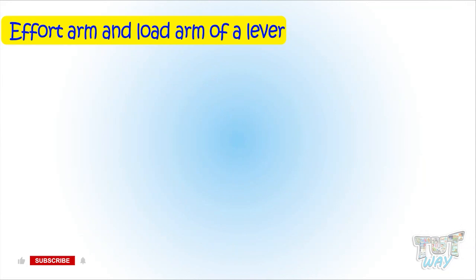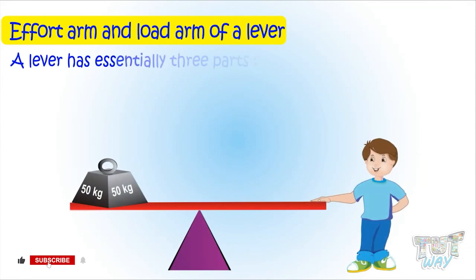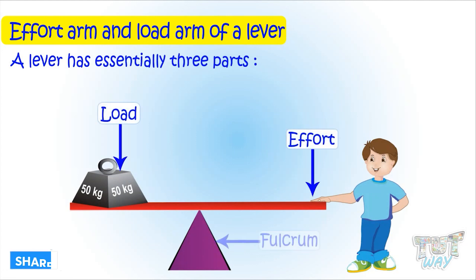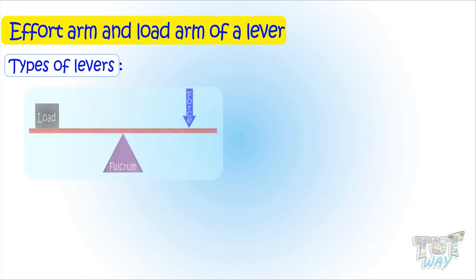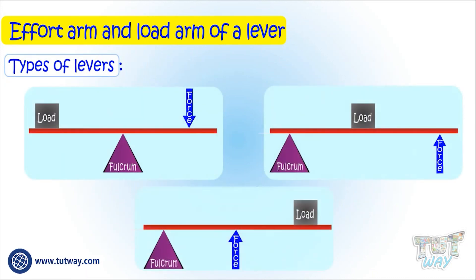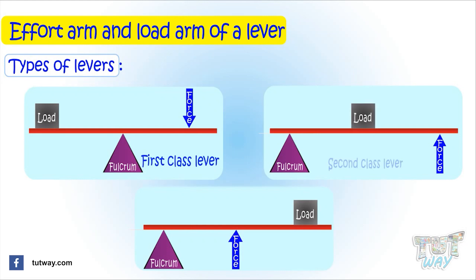We know a lever has essentially three parts: effort, load, and fulcrum. And based on the position of effort, load, and fulcrum, a lever can be of three types — class 1, class 2, and class 3. Fulcrum in the center is a class 1 lever, load in the center is a class 2 lever, and effort in the center is a class 3 lever.